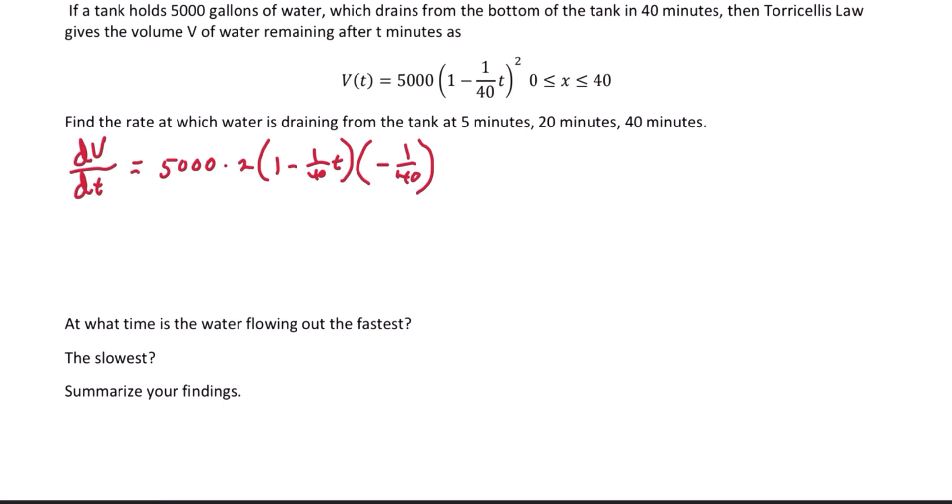And simplifying this, we get negative 250 times 1 minus 1 over 40t, and distributing the negative 250, we get negative 250 plus 6.25t. So that's the derivative of volume with respect to time, or the rate at which the volume is changing with respect to time.